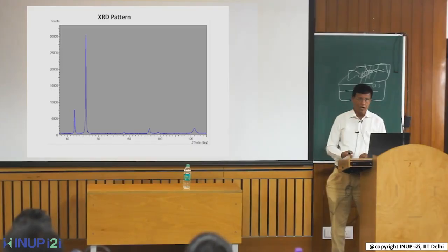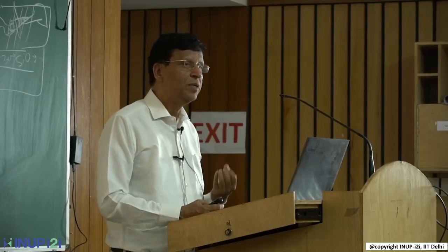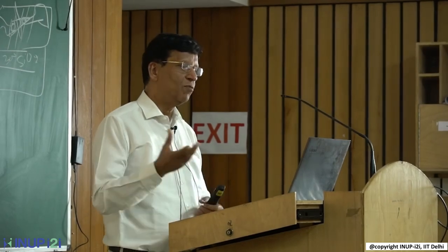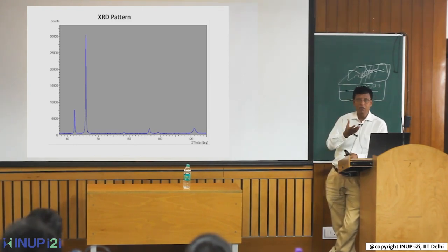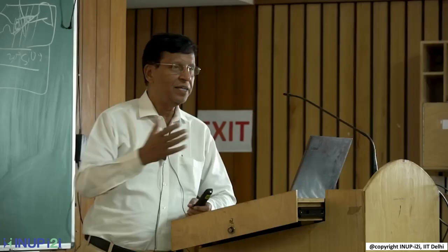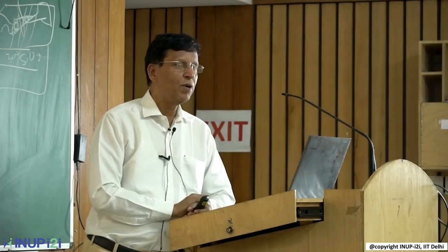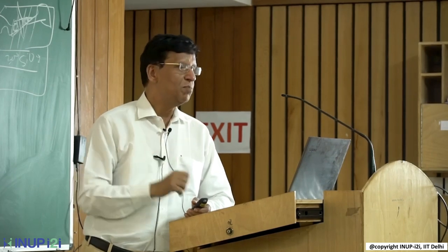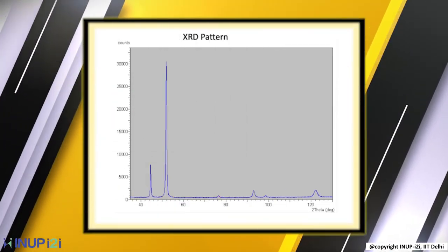If there are extra peaks, you need to speculate what they could be. For zirconium oxide, the impurity might come from the raw zirconium powder you purchased — check the purity level: 99.999% or 95% or what? Alternatively, in a compound like copper zinc selenide, you might also form copper oxide or zinc oxide. Take the reference data for those materials and try to match the extra peaks. That way you can identify and eliminate the impurity phase.